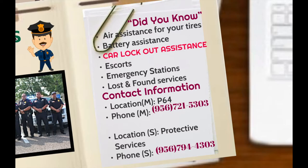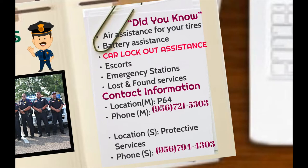For any student who stays late on campus, they can escort you to your car or classes if you feel uncomfortable walking by yourself in the dark. If you find yourself walking late outside and have an emergency, look for the red stations where you press a button, the alarm will sound off, and campus police will arrive. Note that the emergency stations are only for emergencies. They also offer a lost and found service where you might find any lost items on campus. The contact information for the main campus is P64 and the phone number is 956-721-5303, and for the South Campus it is Protective Services at 956-721-4303.